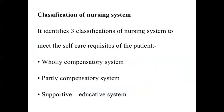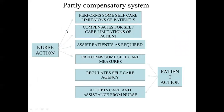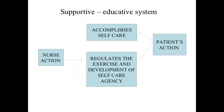According to Dorothea Orem's theory, the nursing system meets the self-care requisite in three systems: wholly compensatory, partially compensatory, and supportive educative. In the wholly compensatory system, the nurse does the majority of activities and patient activity is very limited. In the partially compensatory system, nurse and patient divide activities equally to meet the goal. In the supportive educative system, the nurse's action is limited and the patient does most of the actions — accomplishing self-care tasks and developing the self-care agency.